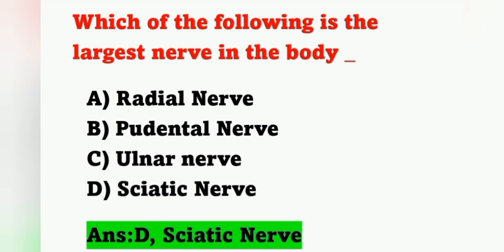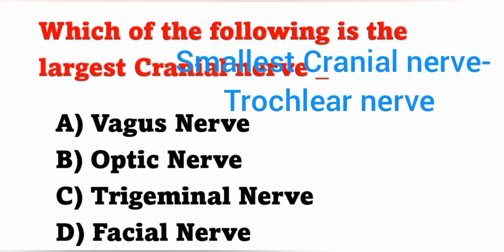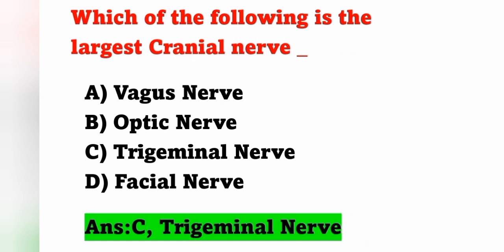Next question: Which of the following is the largest cranial nerve? Options: option A, vagus nerve; option B, optic nerve; option C, trigeminal nerve; option D, facial nerve. The largest cranial nerve is the trigeminal nerve — option C is the correct answer. The smallest cranial nerve is the trochlear nerve, which is the fourth cranial nerve, and the largest is the trigeminal, the fifth cranial nerve.